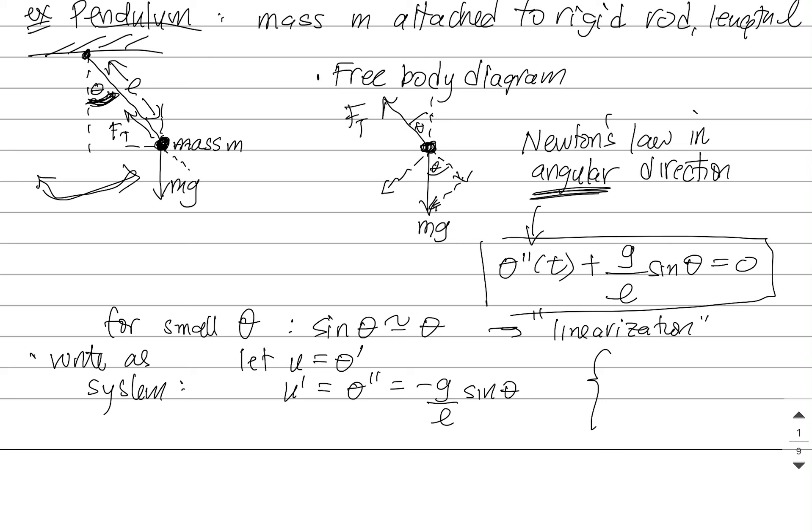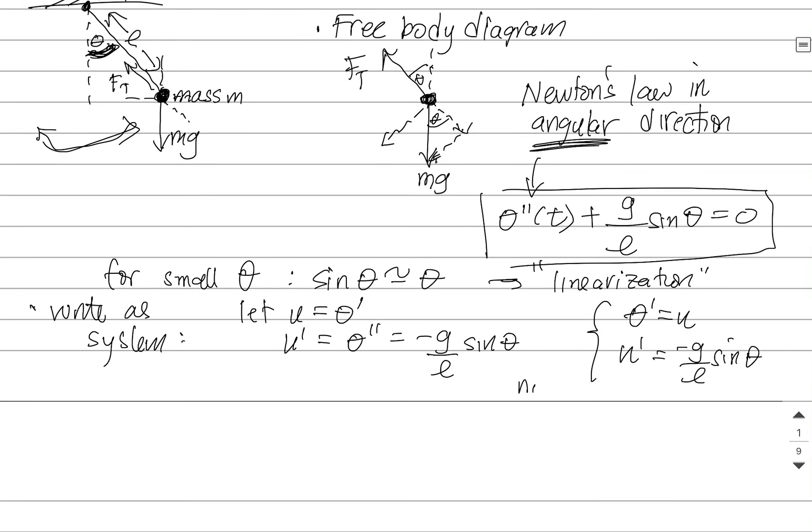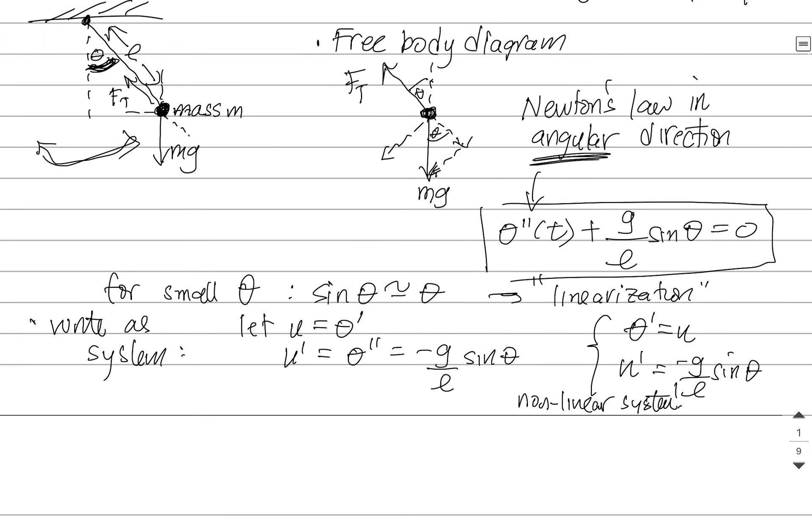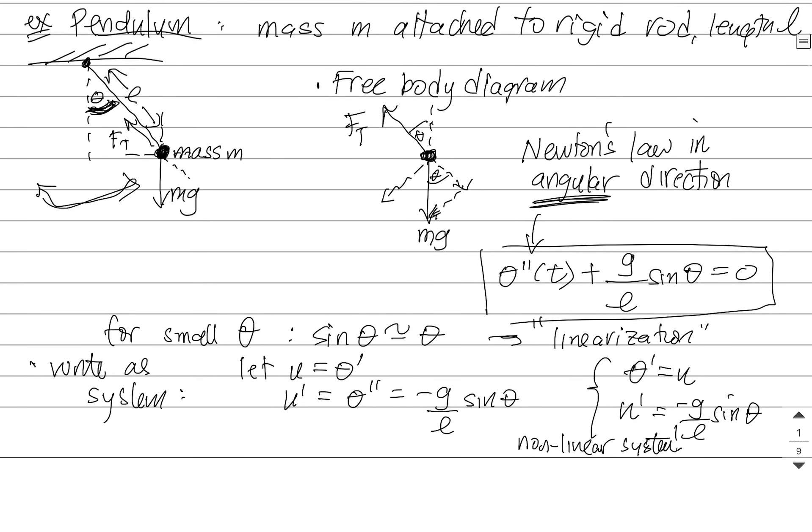And so you end up with a non-linear system. You'll have theta prime is u, and u prime is negative g over l times sine theta. This is a non-linear system. And it comes up very naturally through Newton's laws. So there is one simple example of where non-linearity comes in.